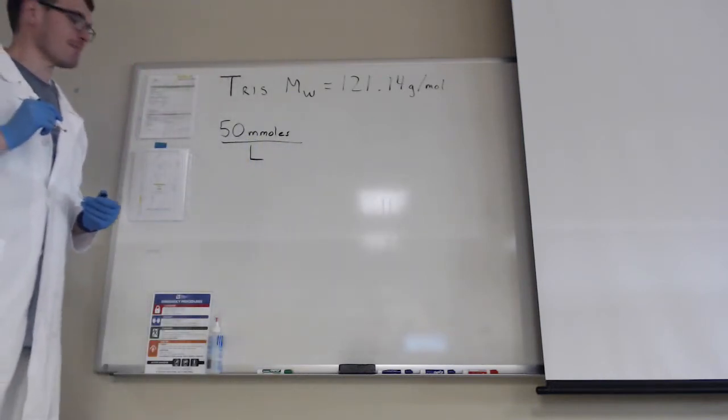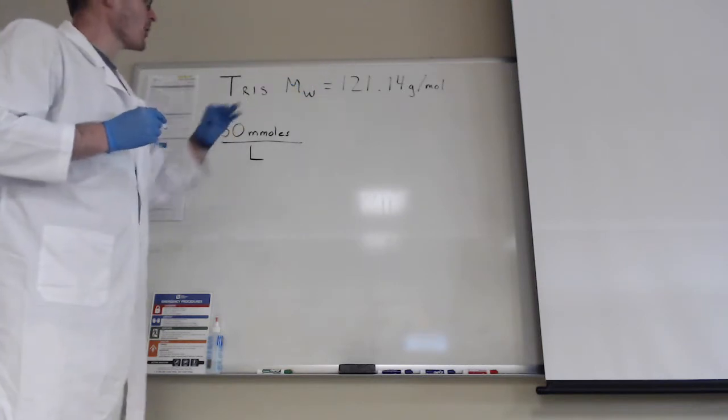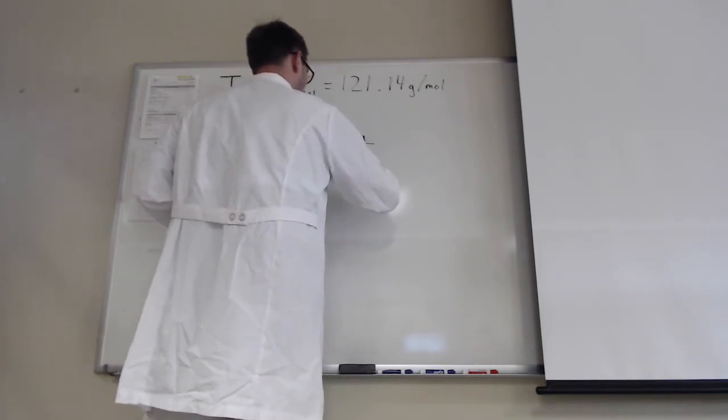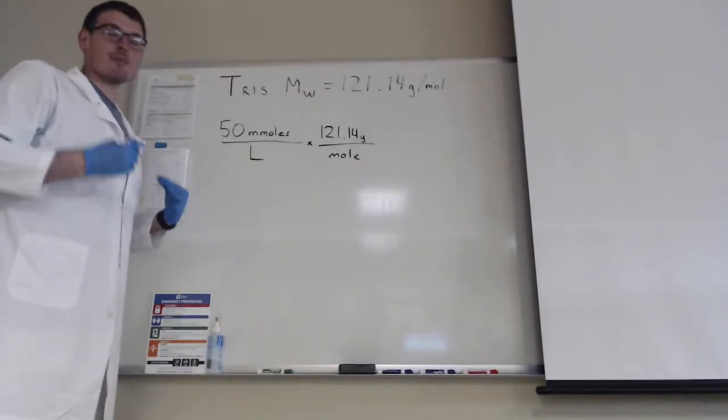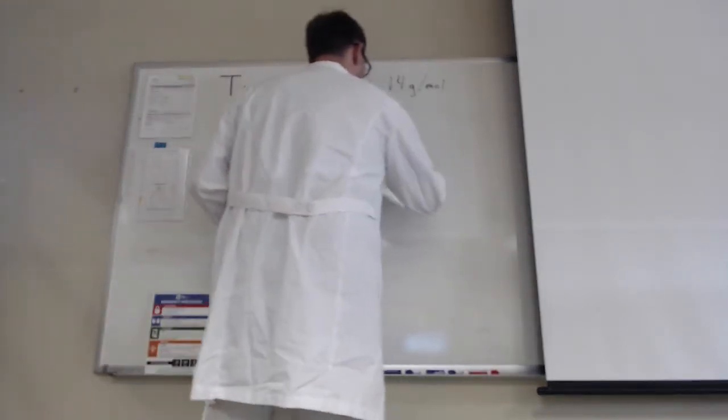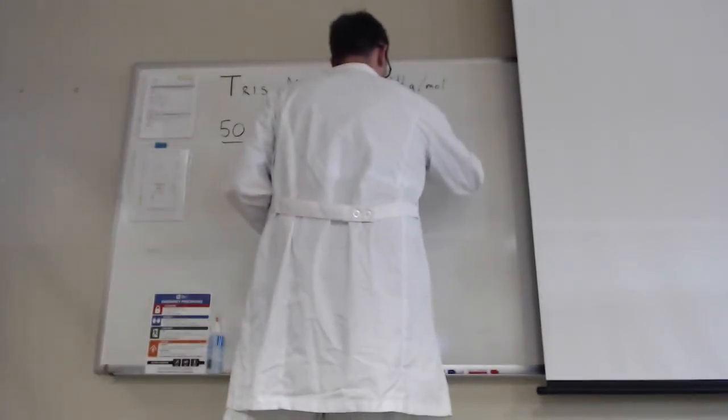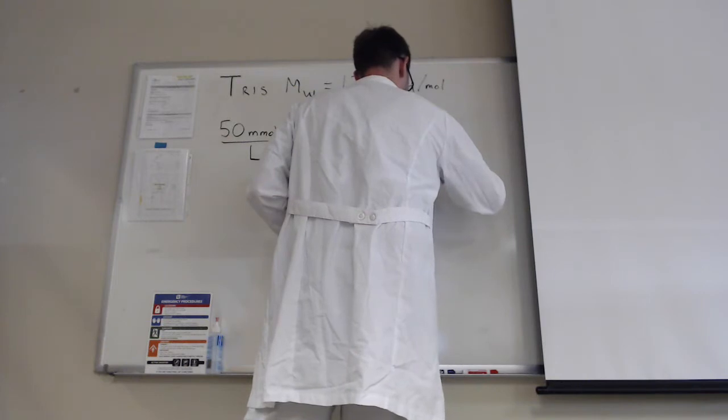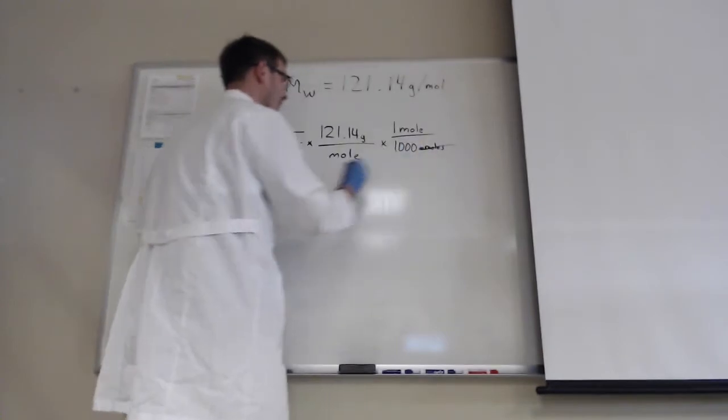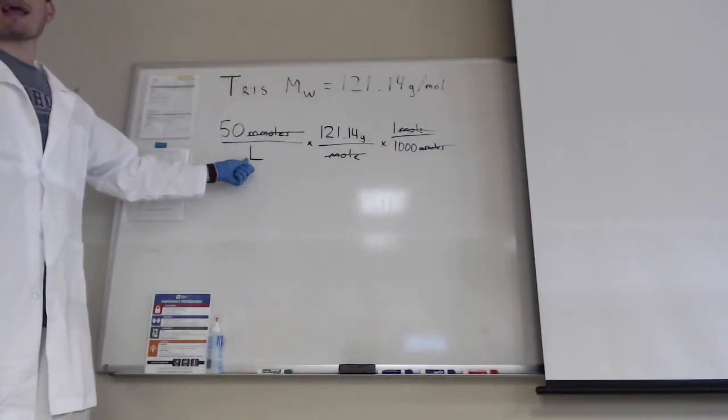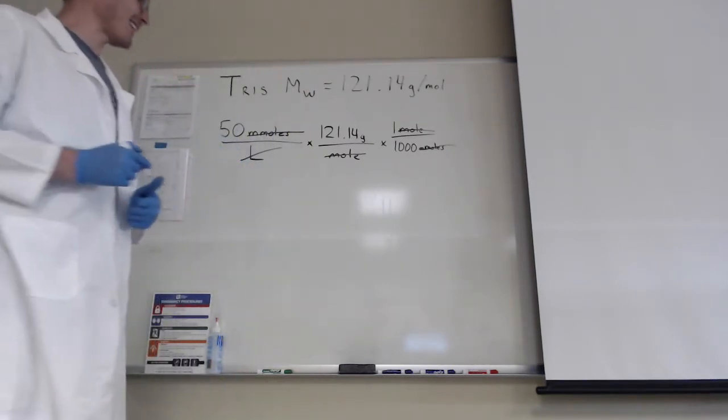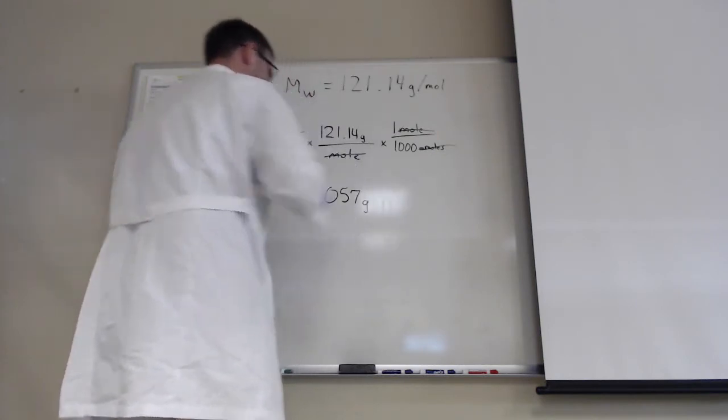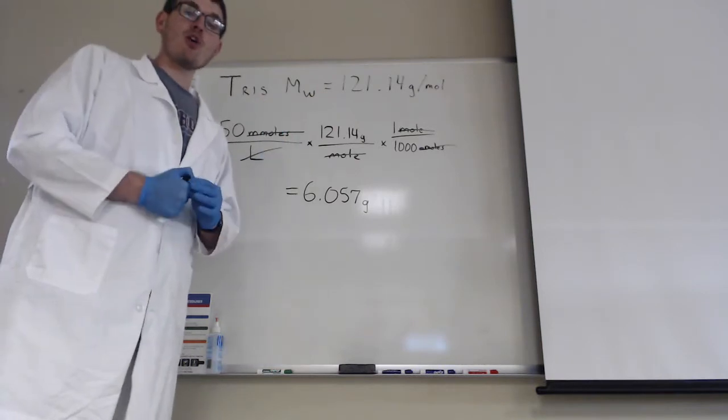Let's go ahead and multiply by the molecular weight here. So we're going to multiply by 121.14 grams per mole. Moles and millimoles can't quite cancel out here because it's not exactly the same unit, so let's apply a conversion factor. We need to know how many millimoles are in a mole. So one mole is going to be equal to a thousand millimoles. We should have millimoles canceling out here, moles canceling out here, and since we know we're making one liter of this we can just go ahead and cancel out liters. So what we're going to get here is 6.057 grams.